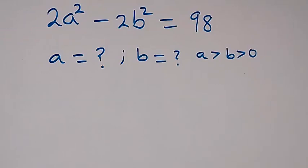Hello, you are welcome. How to solve this nice math problem: we have 2a² minus 2b² equals 98, to find the value of a and b, where a is greater than b and greater than zero.